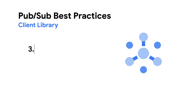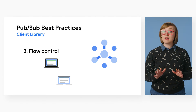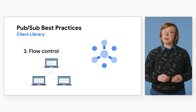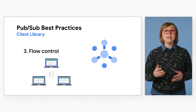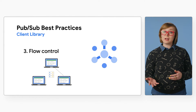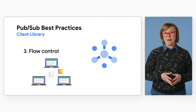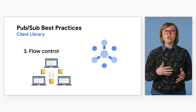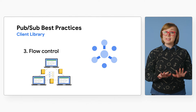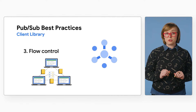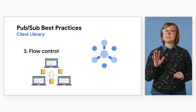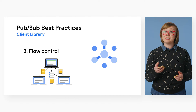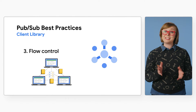Number three: flow control. Consider setting flow control on the publisher if your publish requests are timing out often. With high latency subscribers, you may need to decrease their flow control settings to process fewer messages at any given time.